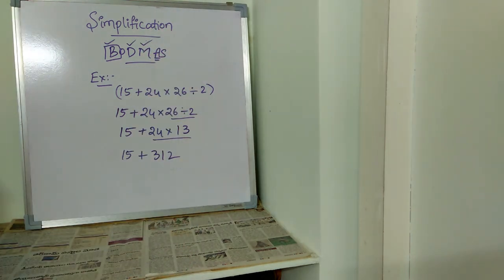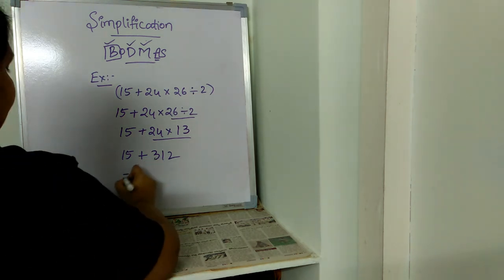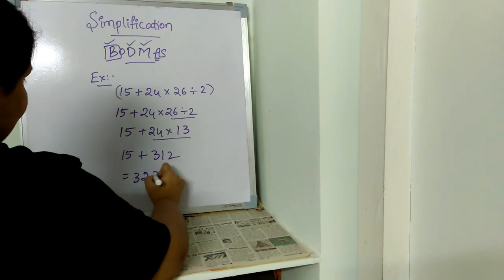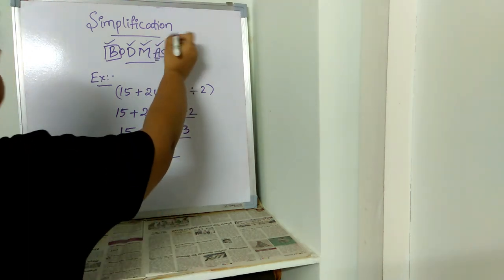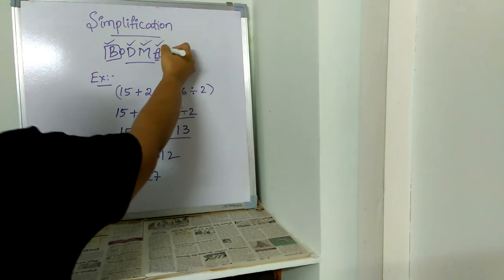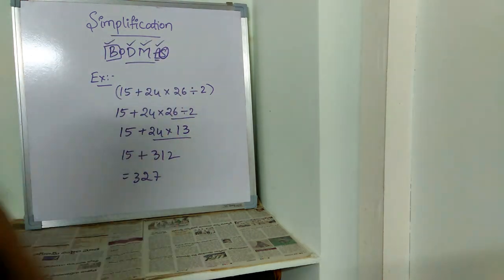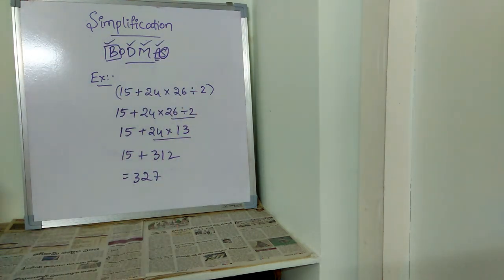Even multiplication is done. Now addition: 15 plus 312, where the answer is 327. Even addition we are done with. There is no subtraction in the problem, so we can just ignore it. Like this, in BODMAS sequence only, we need to solve the given problem.